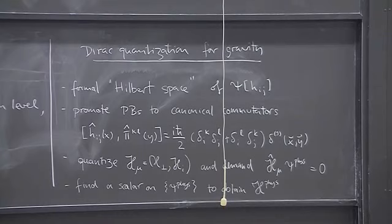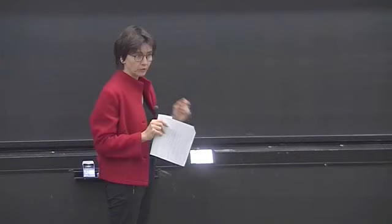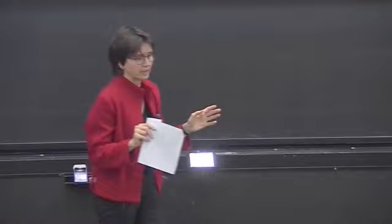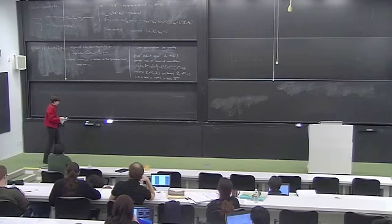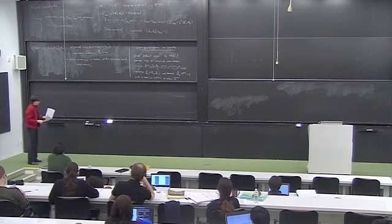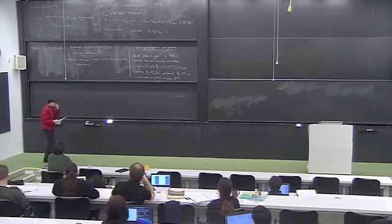And certainly, as you have already seen, these constraints are rather complicated functions of the basic variables. And in particular, the Hamiltonian is a very complicated non-polynomial function of the classical phase space variables. And clearly, I'm going to meet even massive operator ordering problems potentially in quantizing this, even at this very naive level. So there are various problems that are potentially there, and if one really tries to make sense of it, one sees that they are really there.